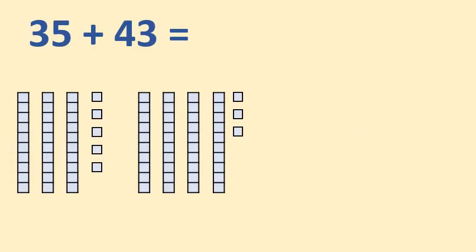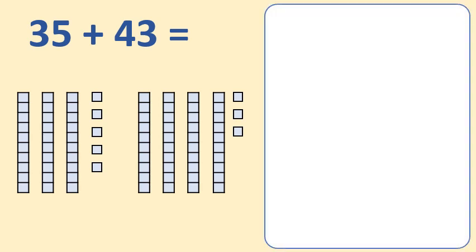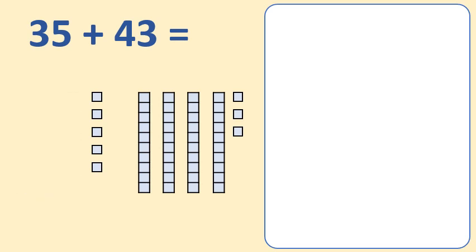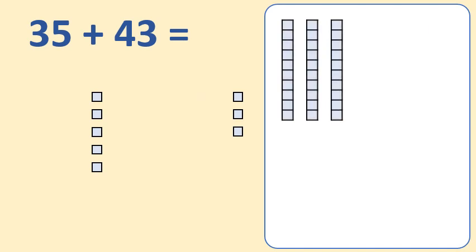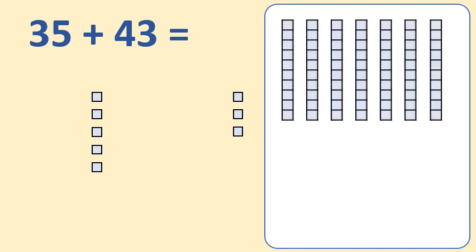When we add two-digit numbers together, it makes it much easier if we first add the tens together, and then the ones. In 35 plus 43, we first add together the tens. Three tens and four tens — three plus four equals seven, so there are seven tens.